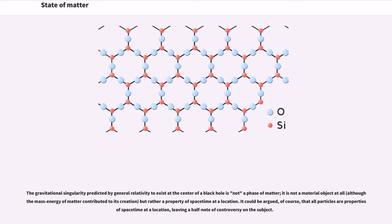The gravitational singularity predicted by general relativity to exist at the center of a black hole is not a phase of matter, it is not a material object at all, although a mass-energy of matter contributed to its creation, but rather a property of spacetime at a location. It could be argued, of course, that all particles are properties of spacetime at a location, leaving a half note of controversy on the subject.